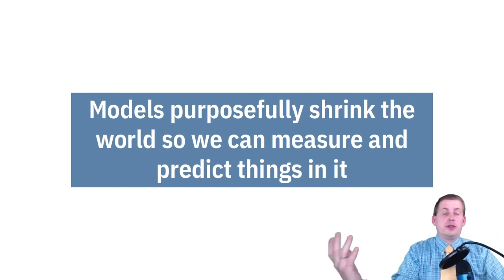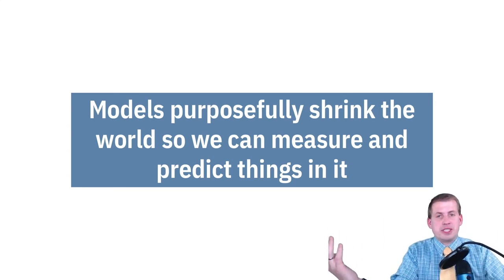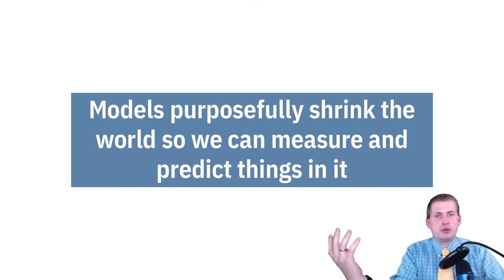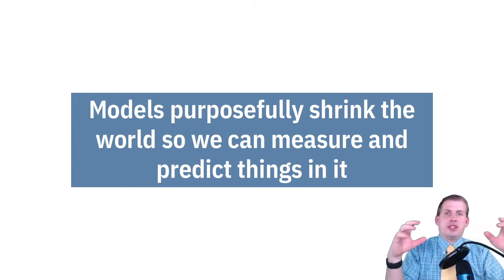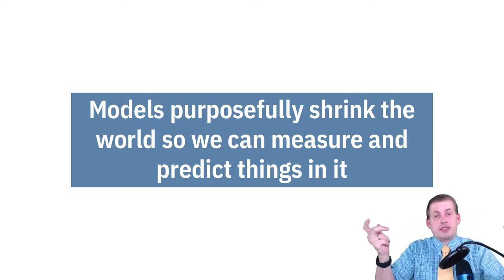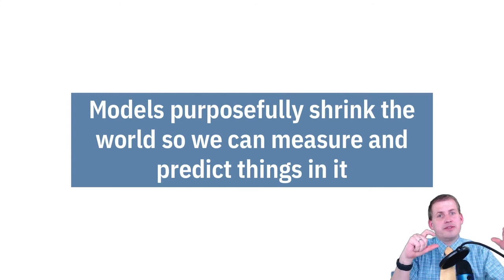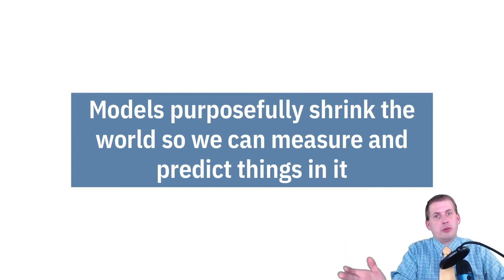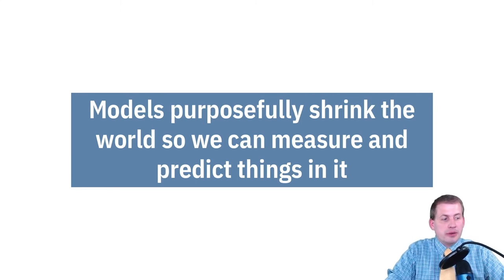And so you have different levels of complexity in these models. They're all useful. A globe is useful for some things. A globe is not going to give you driving directions between two different cities, but it's going to show you the relative position of like Nepal versus Peru. And that's good. And so models have different purposes. And they're supposed to be overly simplified. That's the whole point of using them. That's the only way we can understand the world.